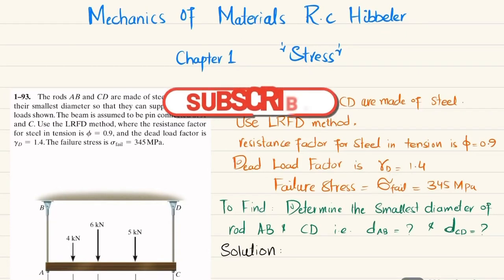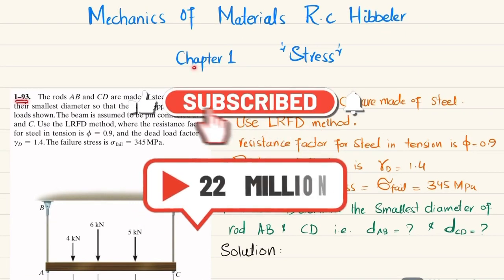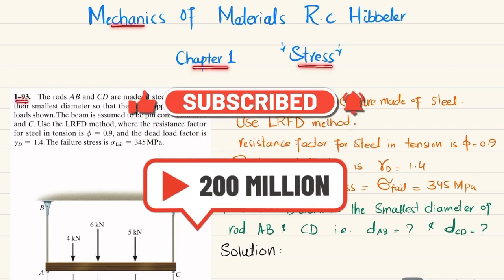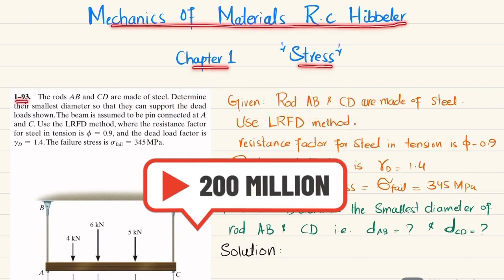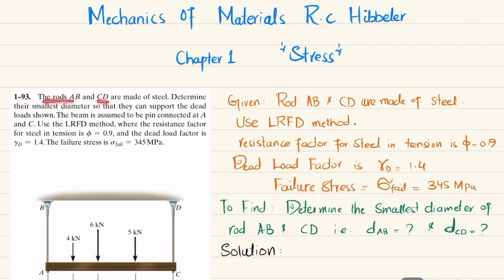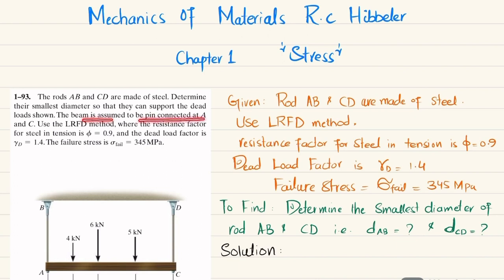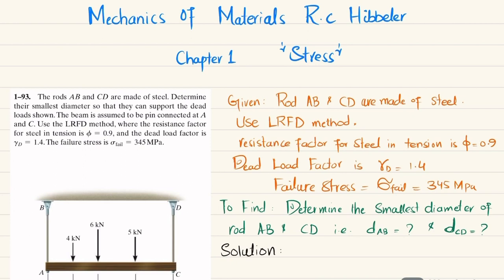Welcome back. In this video we are going to solve problem 1-93 taken from chapter 1, Stress, from the book Mechanics of Materials by R.C. Hibbeler. The statement is: rods AB and CD are made of steel — determine their smallest diameter so that they can support the dead load shown. The beam is assumed to be pin connected at A and C. Use the LRFD method where the resistance factor for steel in tension is 0.9, the dead load factor is 1.4, and the failure stress is 345 MPa.